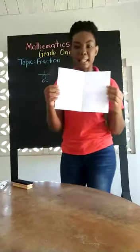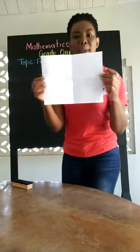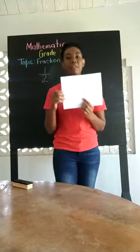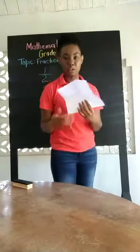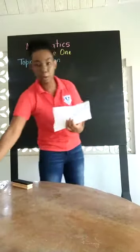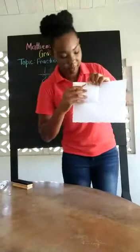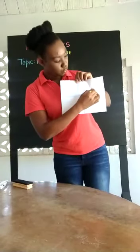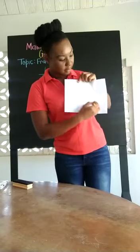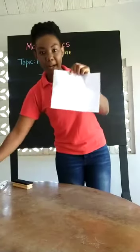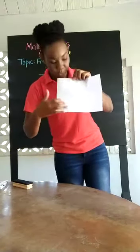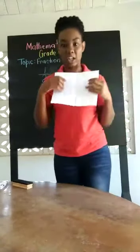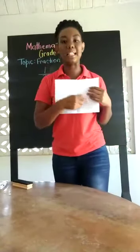I want you to open the paper and tell me how many parts do you see. We have four sections. Let us count them: one, two, three, four. We have four parts — one, two, three, four. And each section we call it a quarter.